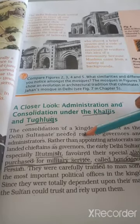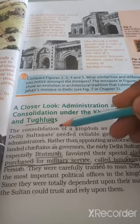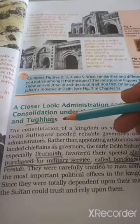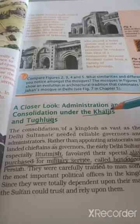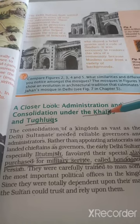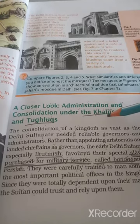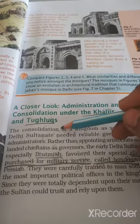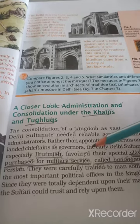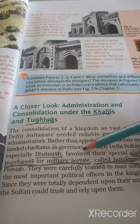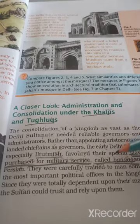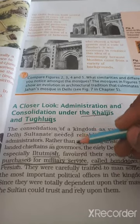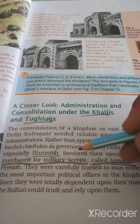Now the next topic is a closer look. I have already discussed the two Sultans — Alauddin Khalji and Muhammad Tughlaq. Who are the competitors of the Sultan? The Mongols. The Mongols were the rulers of Afghanistan and competitors of the Delhi Sultanate.